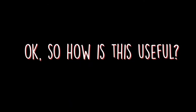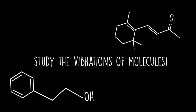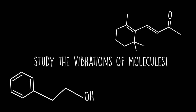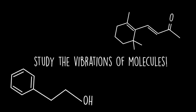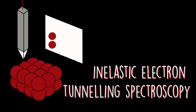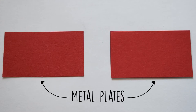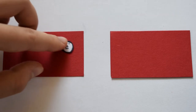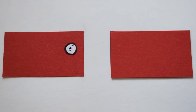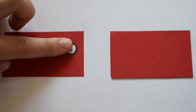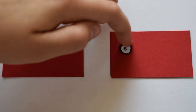But what does this have to do with the way molecules vibrate? Well, there is a way electron tunnelling can be used to study the vibrations of molecules — more exactly their resonant frequencies. This tool is called inelastic electron tunnelling spectroscopy. To understand how this works, imagine two metal plates separated by a barrier. By applying a bias voltage between the contacts and having a thin enough barrier, there is a finite probability that the incident electron tunnels to the other side.